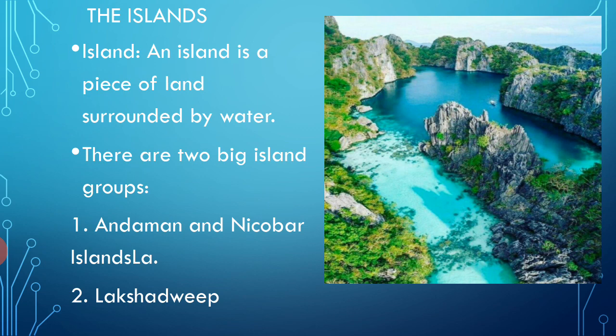First of all, let's see what is an island. An island is a piece of land surrounded by water on all sides. There are many small islands along the coast. Away from the coast there are two big island groups: the Andaman and Nicobar Islands and the Lakshadweep Islands.